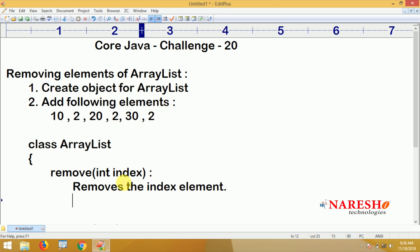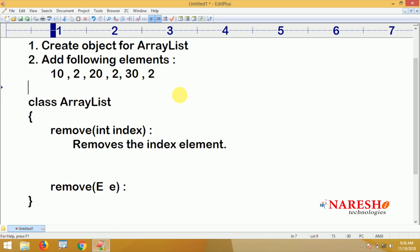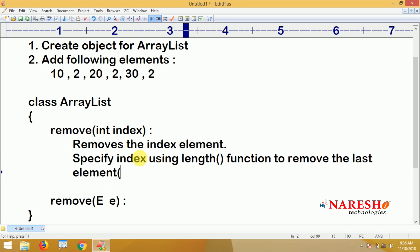With the help of this method you have to remove the last element by specifying the index. While specifying the index, specify index using length function to remove the last element, that is 2 in the list.